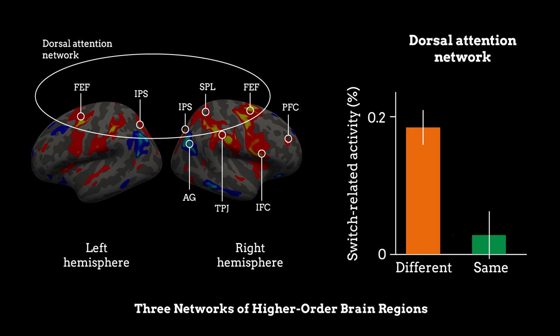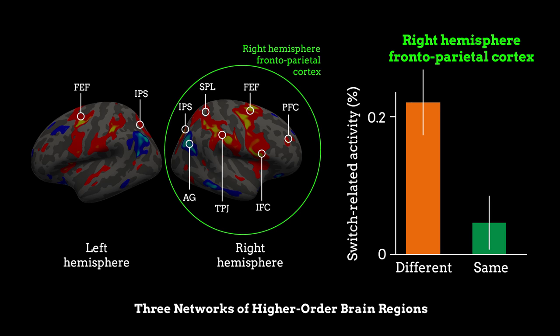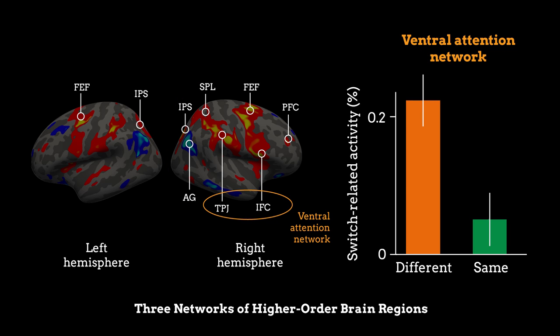They observed that the switch-related activity of these networks was much smaller in the same color condition, indicating that these higher-order regions did not control perceptual switching.